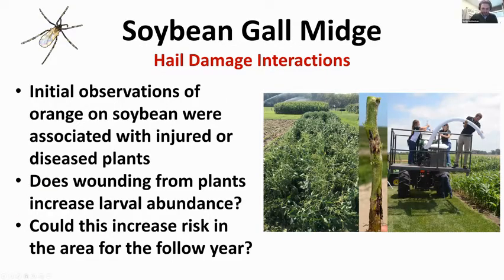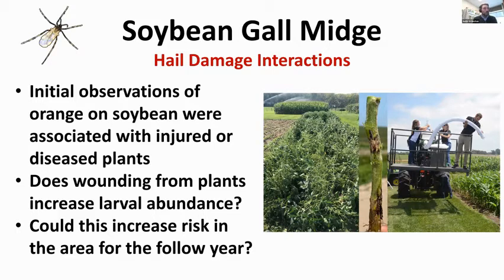One thing worth bringing up is hail damage and its interactions with soybean gall midge. Some of you may have observed this in the field. When we first ran across what we thought was soybean gall midge back in 2011 — which could never be confirmed — Tom Hunt and a few others found these orange larvae on injured or diseased plants. So we've been asking: does wounding — mechanical wounding from a hailstorm — increase the abundance of larvae on the plant, and could this increase risk the following year?